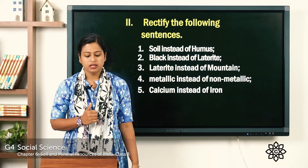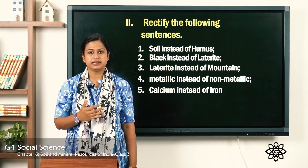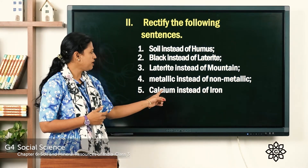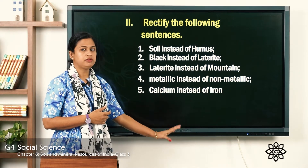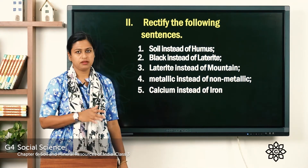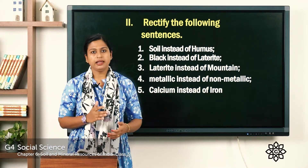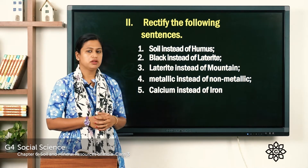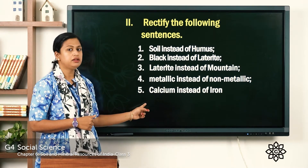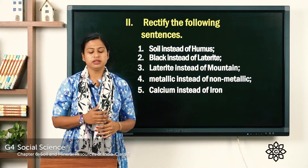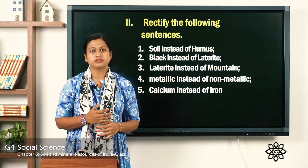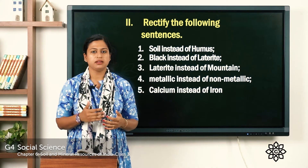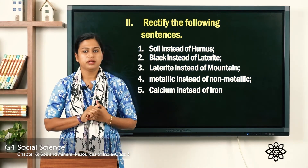The fourth one — the minerals from which we get metals are called non-metallic minerals — you have to write metallic instead of non-metallic. The fifth one — iron found in milk helps us build strong and healthy bones — instead of iron you have to write calcium. Calcium found in milk helps us build strong and healthy bones. Write all these exercises in your notebook with the proper date.